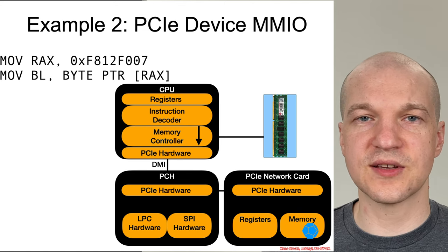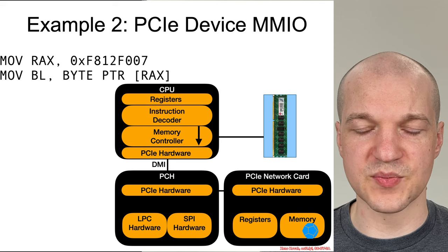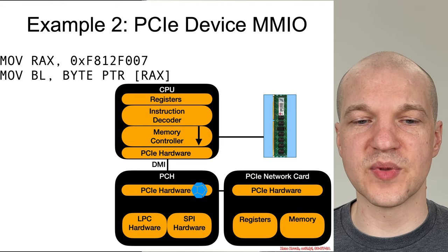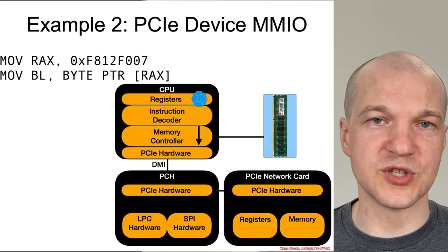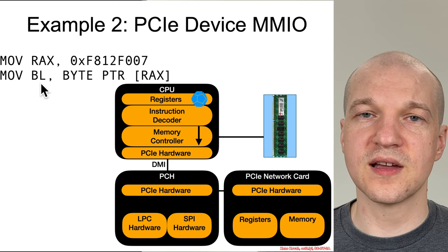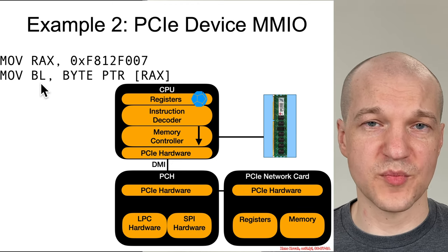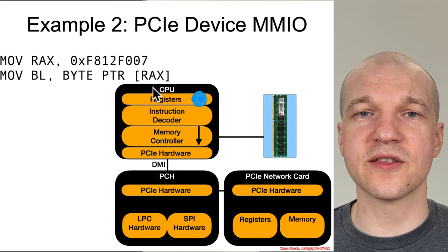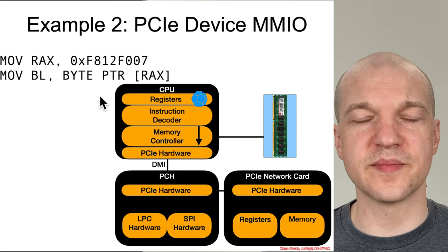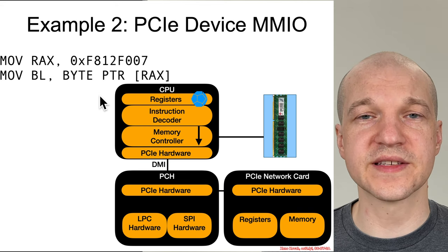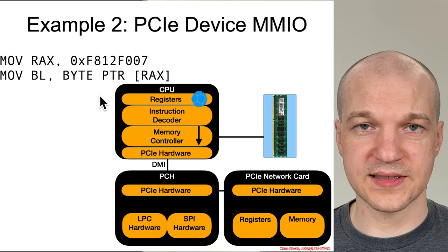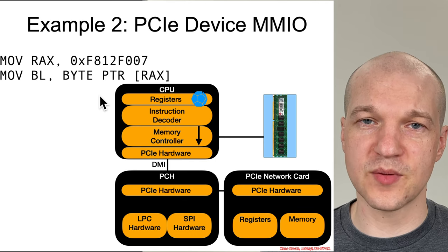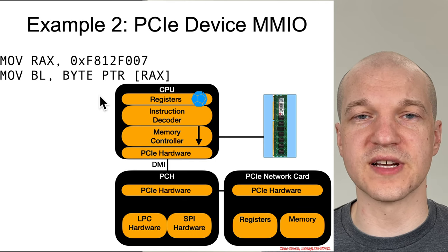The hardware goes out, grabs the information being requested, sends it back via the PCIe bus, and it goes all the way back up to ultimately be fed into the register. From your perspective on the CPU, it just looks like any other memory access. And that's what memory-mapped I/O means — you look like you're accessing memory, but in reality you're doing I/O input-output to some peripheral device.